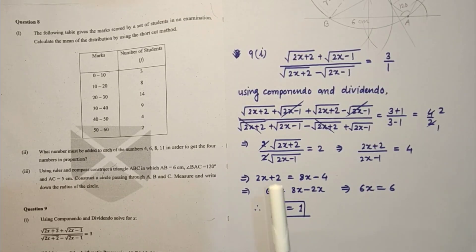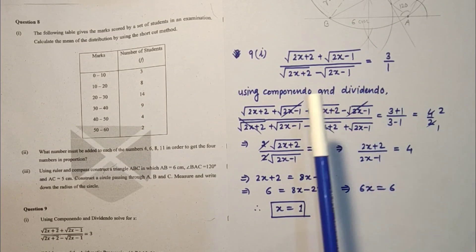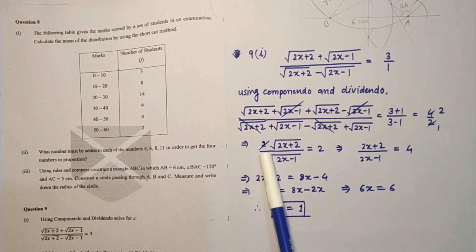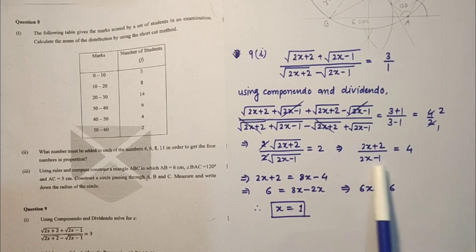Question number 9 first sub part. Using componendo and dividendo, numerator plus denominator upon numerator minus denominator is on both sides. After cancellation we are getting this thing and squaring. 2 square is 4, these will be free from under root sign. Cross multiplication, simplification, X is equal to 1, that is the answer.